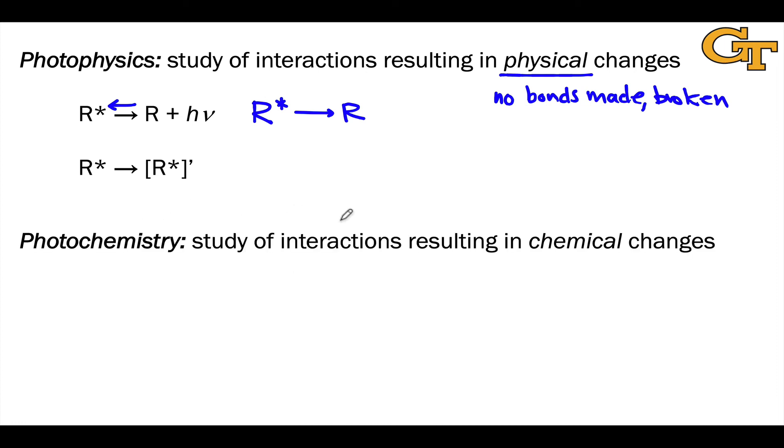Photochemistry happens when a chemical change takes place, and of course, it's the opposite to the first case. When bonds are made and broken, we're doing photochemistry. This is a general paradigm for photochemical reactions that we'll explore a little bit later. For the time being, I'll just focus on the key idea is that a bond is made or broken.